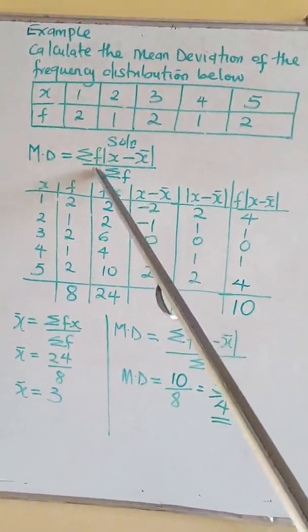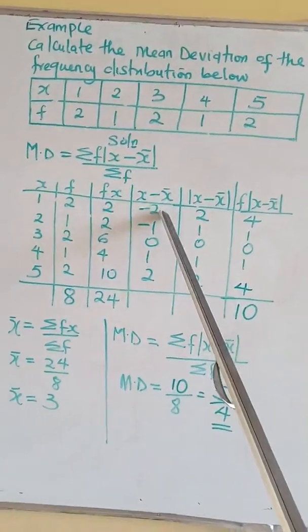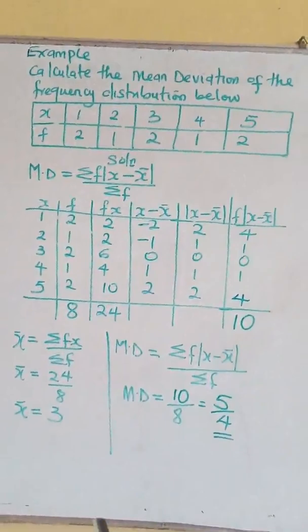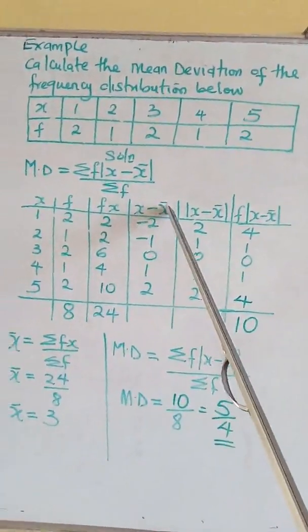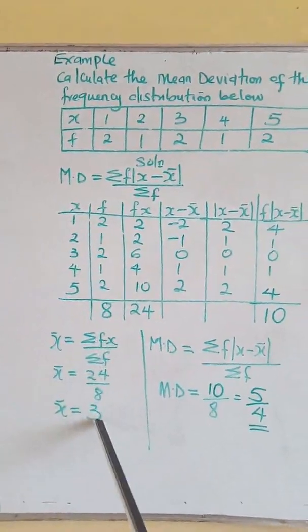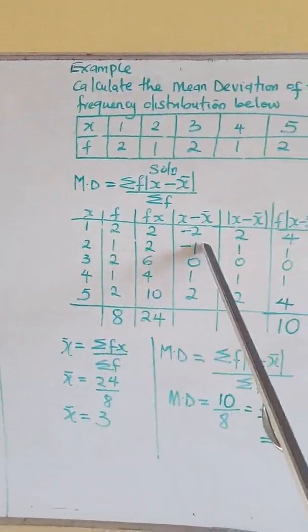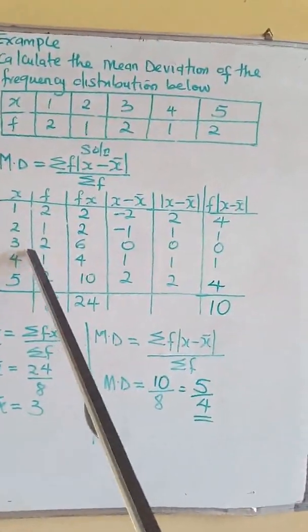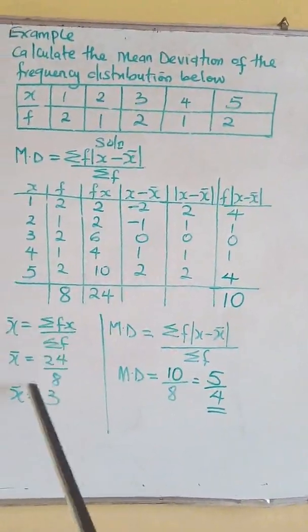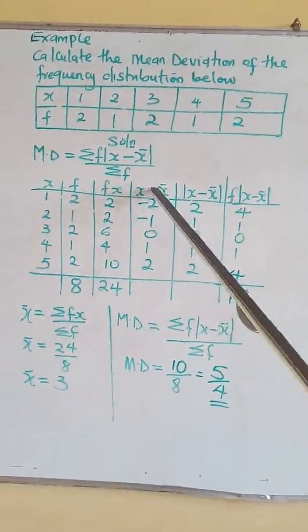Now we know our mean. Go to the formula for absolute value, so I'm going to get absolute value which is x minus x̄. What is x minus x̄? The individual value of x, remove 3 from it: 1 minus 3 is minus 2, 2 minus 3 is minus 1, 3 minus 3 is 0, 4 minus 3 is 1, 5 minus 3 is 2.